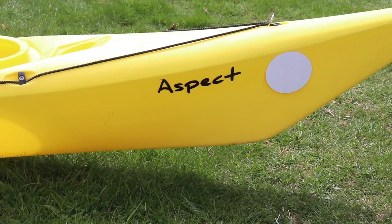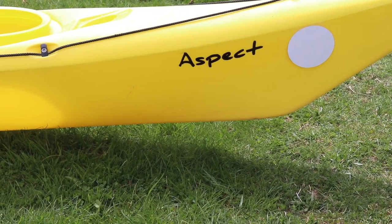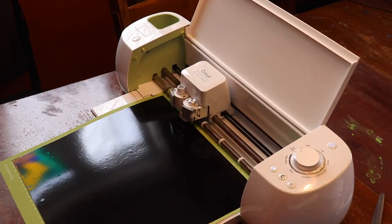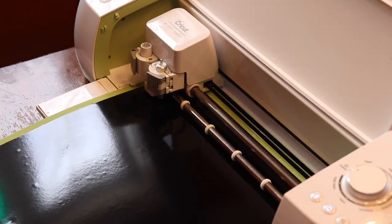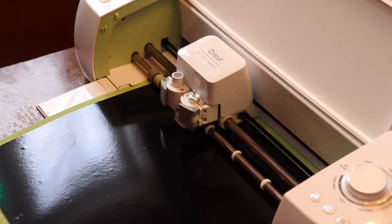So the white circles here on the kayak and the paddles are just templates for where we're going to put the logo. This is the Cricut Explore machine cutting the design, and this clip is sped up.